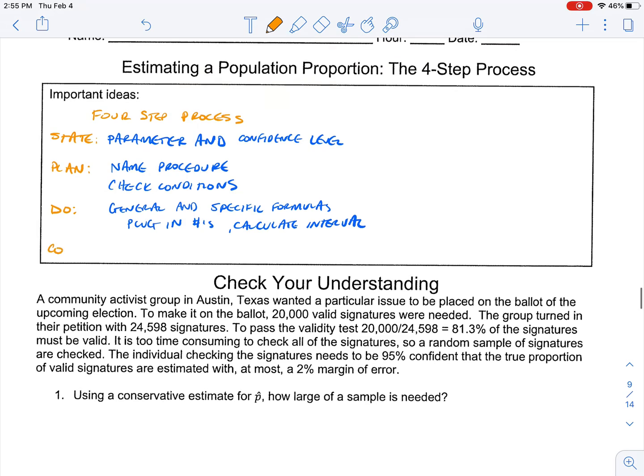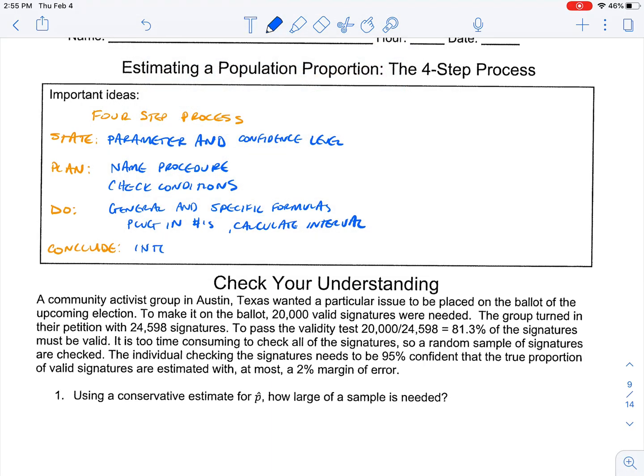And if you think about it, all this stuff kind of follows a logical flow, right? And then at the end, we want to conclude. And when we conclude, what we're doing is we want to interpret the interval in context, which is important. And it's that prompt where we say, we are 95% confident, et cetera, et cetera.